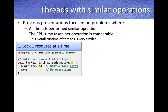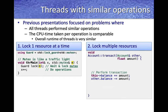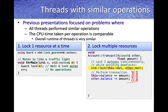We looked at two approaches. The first is one resource at a time, where we used a lock guard to lock one resource and establish a critical section. We also looked at the dining philosopher model, where we had to lock multiple resources simultaneously to establish critical sections. Locking multiple mutexes simultaneously is important to avoid deadlocks, and it's equally important to unlock them.